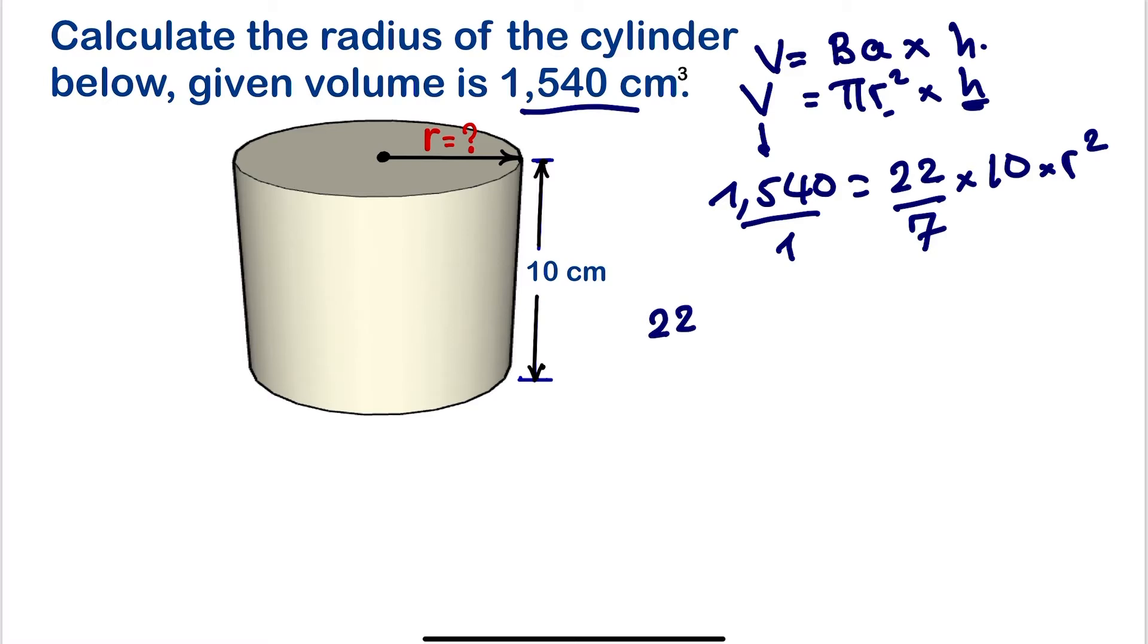One times all of these, so we are going to have 22 times 10, which is 220r² should be equals to—we need to multiply 1,540 times 7.